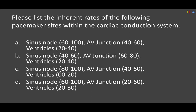Review: list the inherent rates of the following pacemaker sites. Sinus node 40 to 60 — absolutely not correct. Sinus node 80 to 110 — also incorrect. That brings us to two remaining options. AV junction 40 to 60 or 20 to 60? The correct answer: sinus node runs 60 to 100, AV junction is 40 to 60, and ventricles are 20 to 40. The other options listed are incorrect.